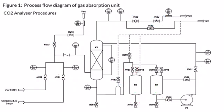Carbon dioxide analyzer procedures: Switch on the control panel and let the system run for about 15 minutes to stabilize and to ensure the carbon dioxide analyzer is warmed up. Check that the control panel readings QT401 and QT402 achieve a constant value.